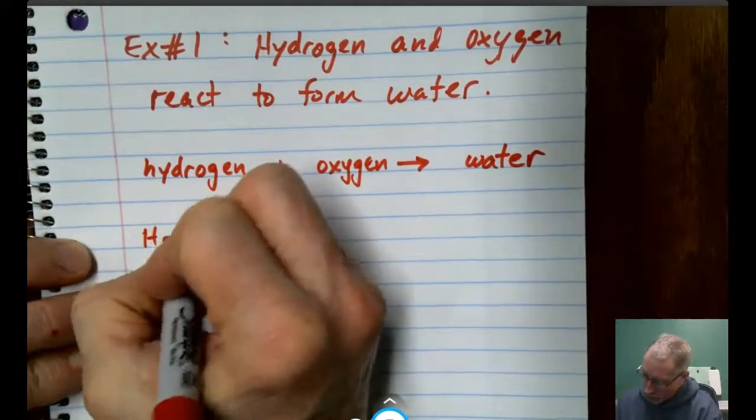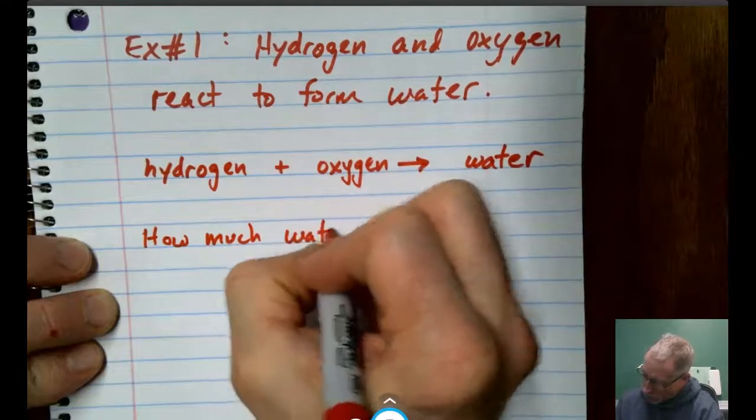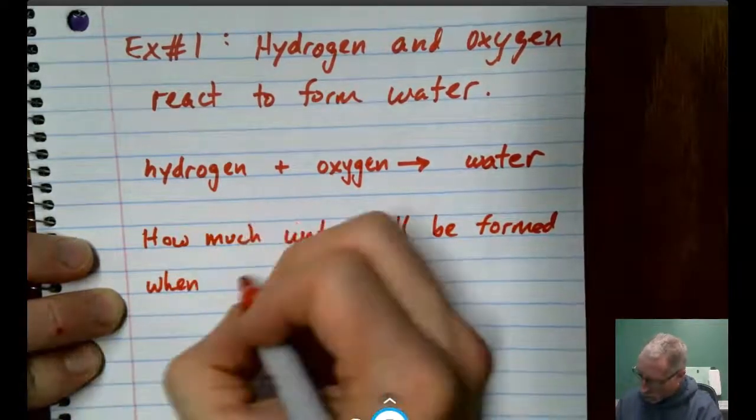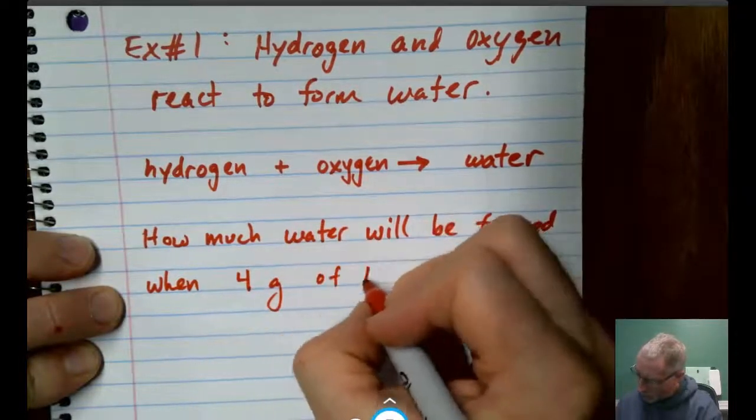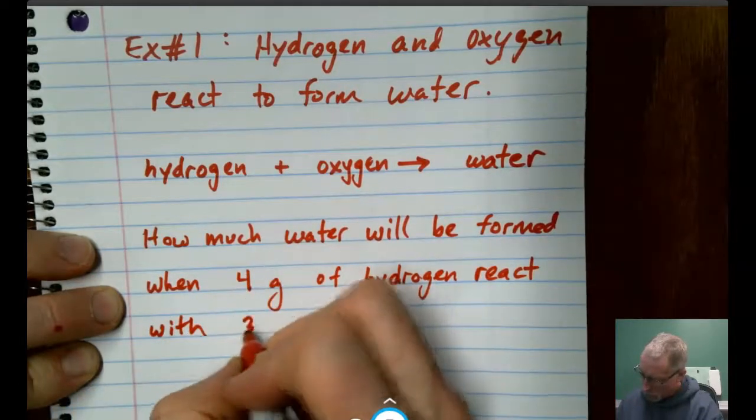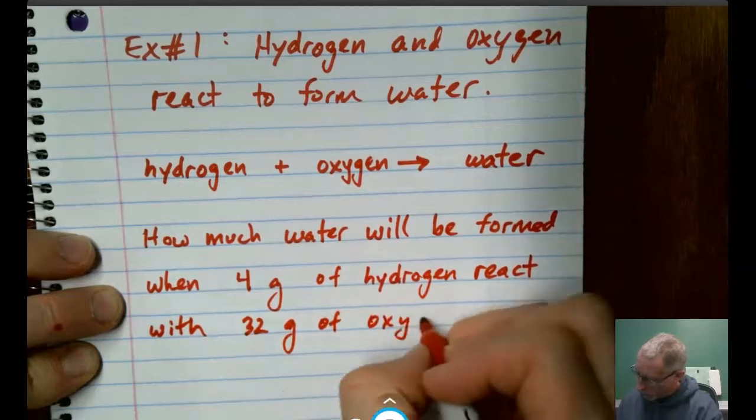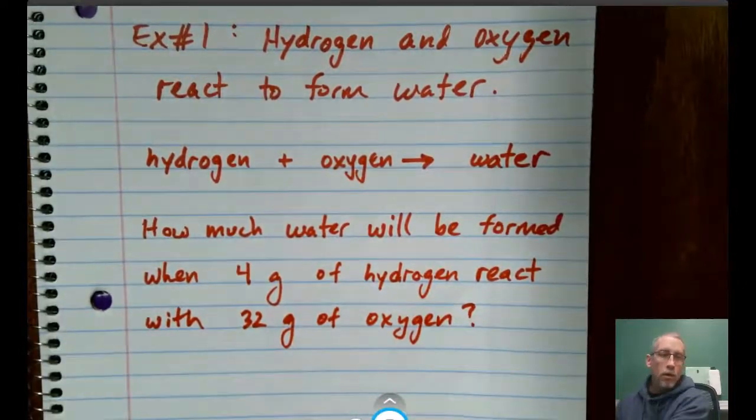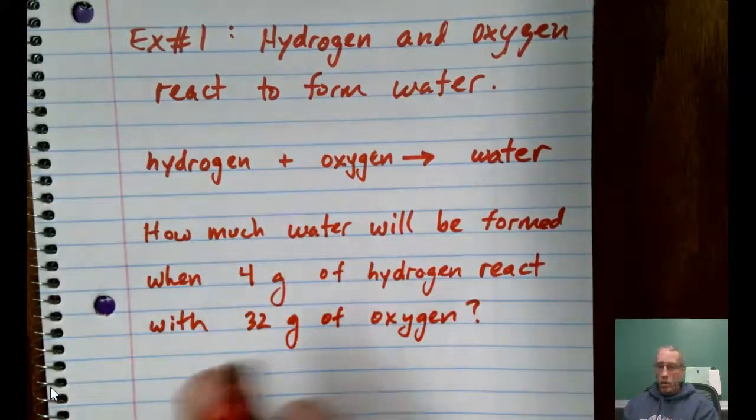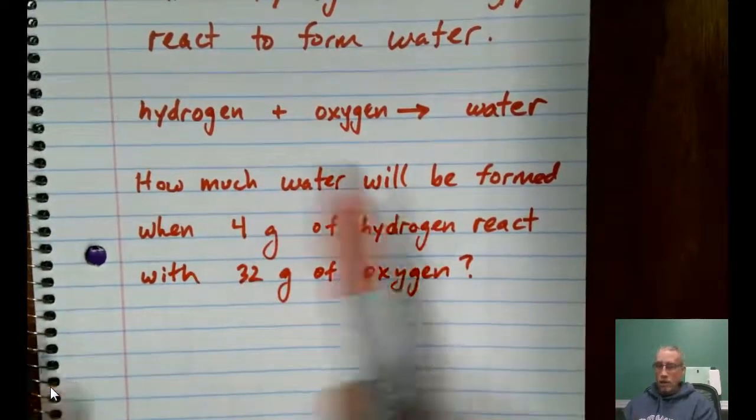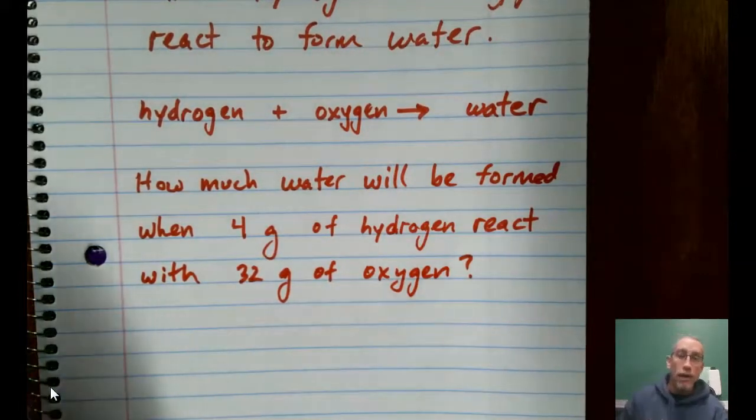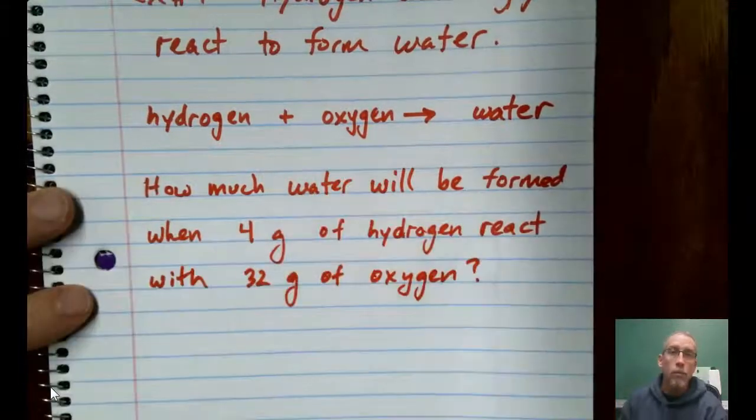So, let's ask this. How much water will be formed when four grams of hydrogen react with 32 grams of oxygen? One of the things I did here was I wanted to have a form of the equation. Now, we used words instead of symbols here but it still works because it really helps when you're answering questions like this to have that in front of you or some form of the equation.